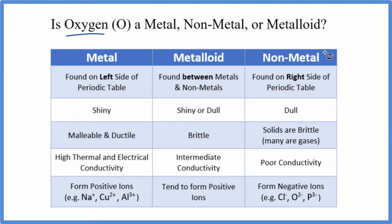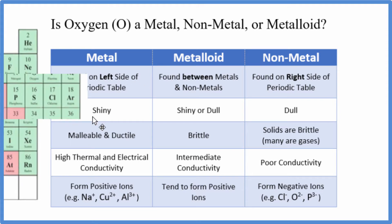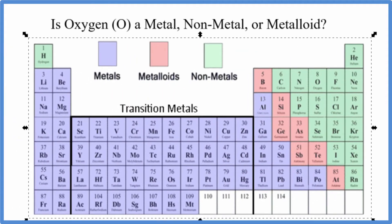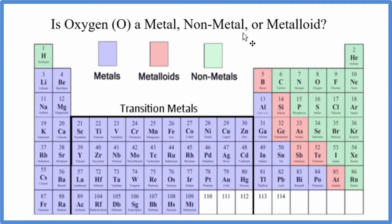If we look at the periodic table, we would expect that the metals are on the left-hand side, and on the right-hand side we'd have the nonmetals. In between, we'd have metalloids. Here we have the periodic table broken up into metals, nonmetals, and metalloids.